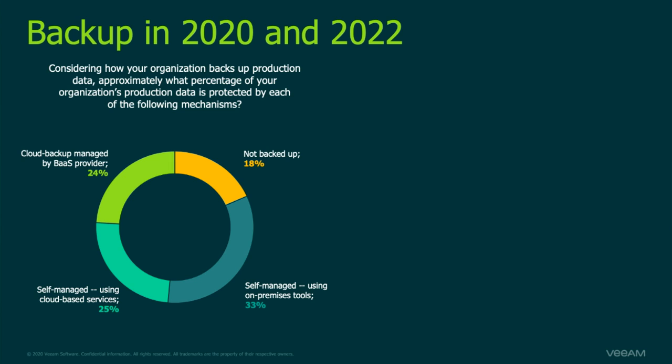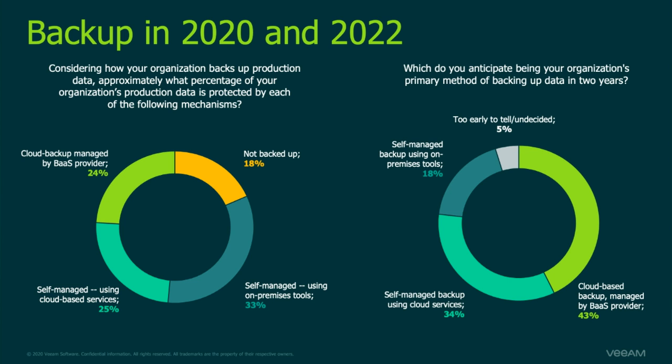Some folks just want cloud storage — that's the cooler green in the lower-left corner. Some folks really want not only data out of the building, but managed by a smarter human — that's the BaaS segment. Now that's 2020 data. We asked organizations: what's going to be your primary method of data protection by 2022? What you see is that cloud-provider-managed segment, which was 24%, is now 43% — nearly double. Self-managed but still using cloud goes from 25% up to 34%, a 50% increase. Self-managed only on-prem reduces down to 18%.